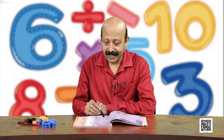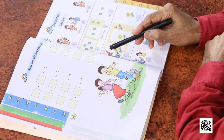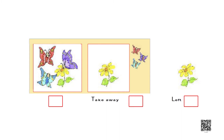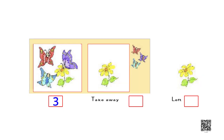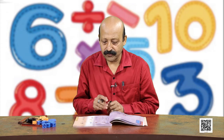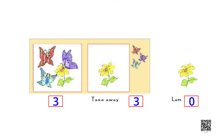How many butterflies are there? 1, 2, 3 - there are 3 butterflies and some have been taken away. How many have been taken away? Out of 3, all 3 have gone away. What is left? Only the flower. So we can write: 3 butterflies, 3 have been taken away, and how many butterflies are left? No butterflies left - we write 0. So out of 3, 3 have been taken away, we are left with 0.